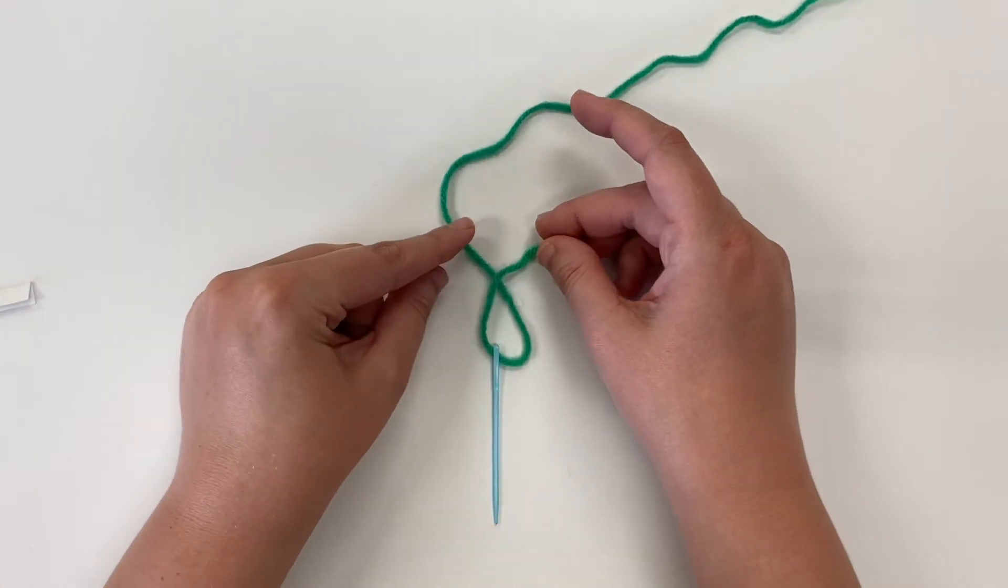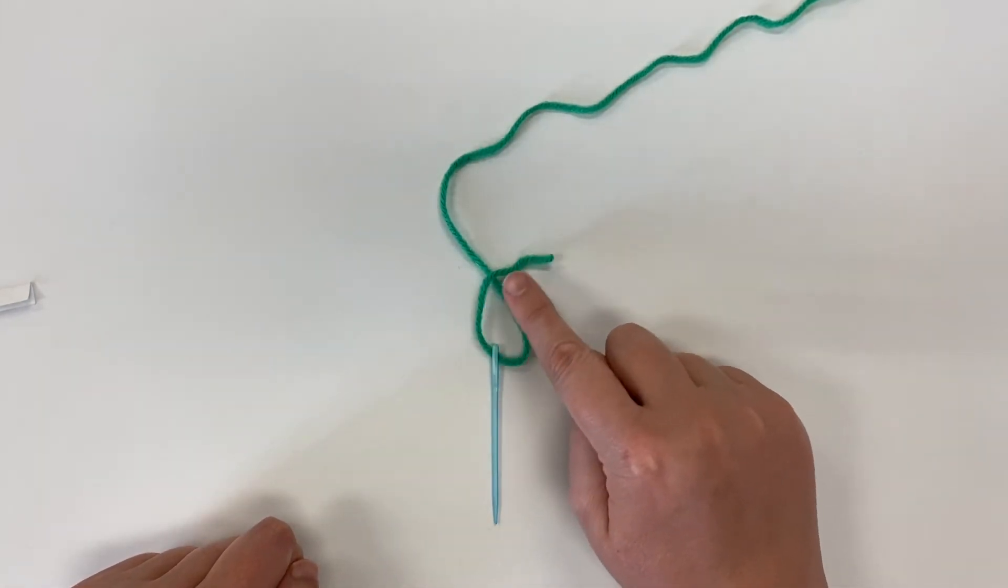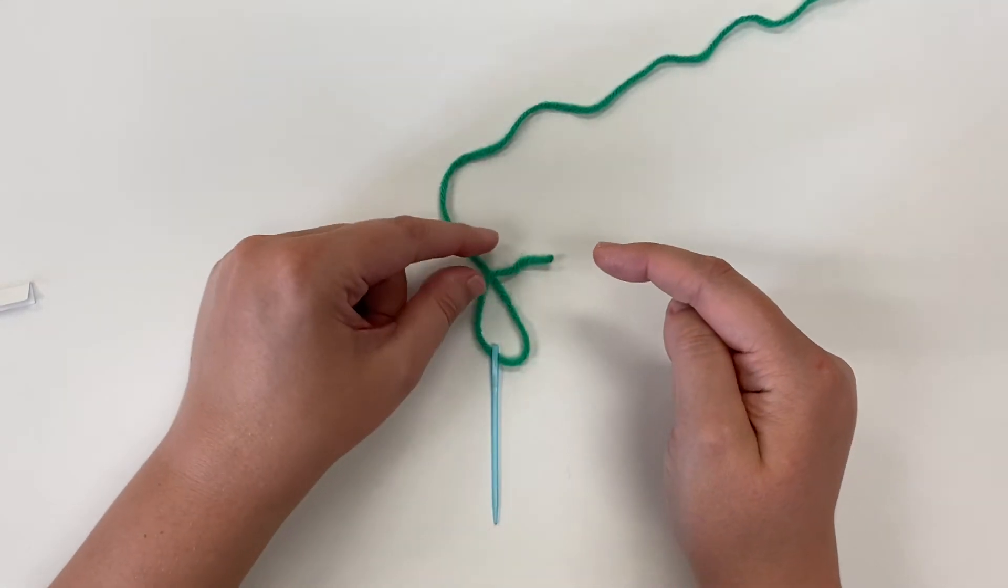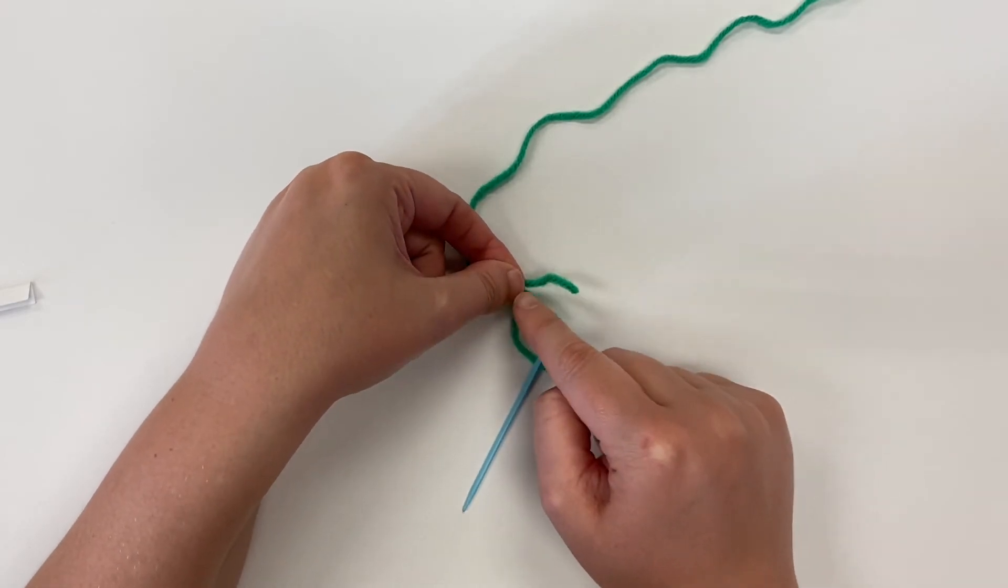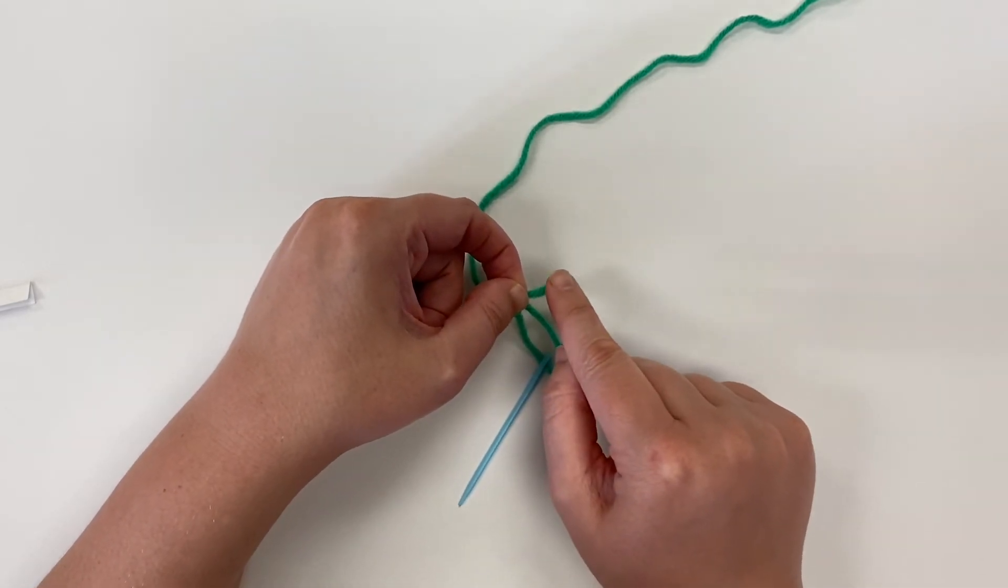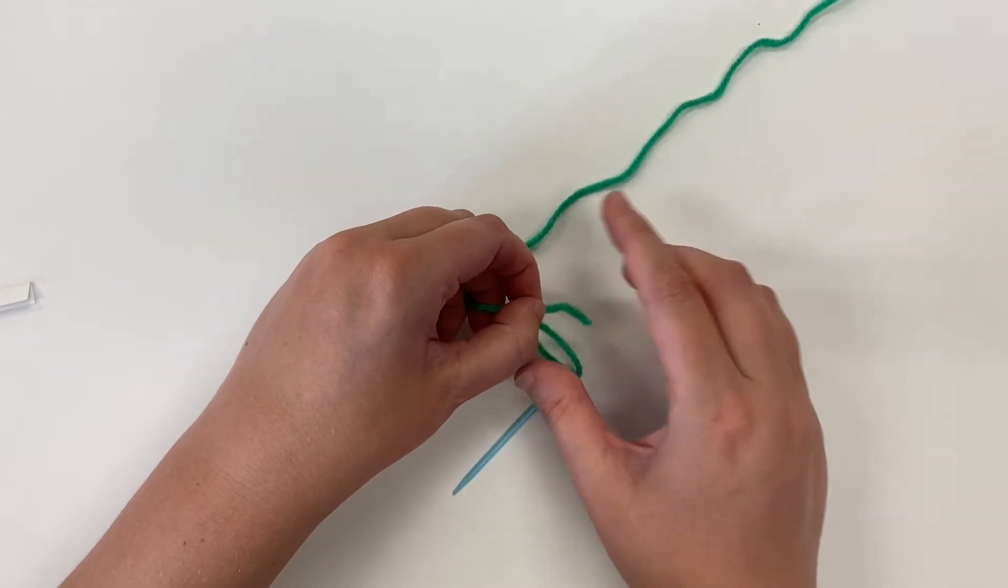I'm going to cross the short side of my yarn over the long side and I made a little circle right there above the needle. Then I'm going to pinch it and pick it up. I'm pinching it right at the middle of the X, picking it up, and I'm going to take this little tiny tail and fold it.